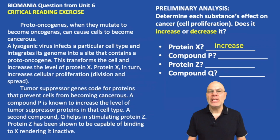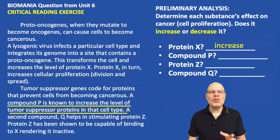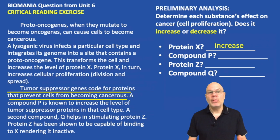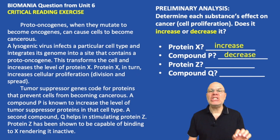What about compound P? Compound P is in the second paragraph and it tells you that compound P is known to increase the level of tumor suppressor proteins, and tumor suppressor proteins prevent cells from becoming cancerous. So compound P is going to decrease cell proliferation.